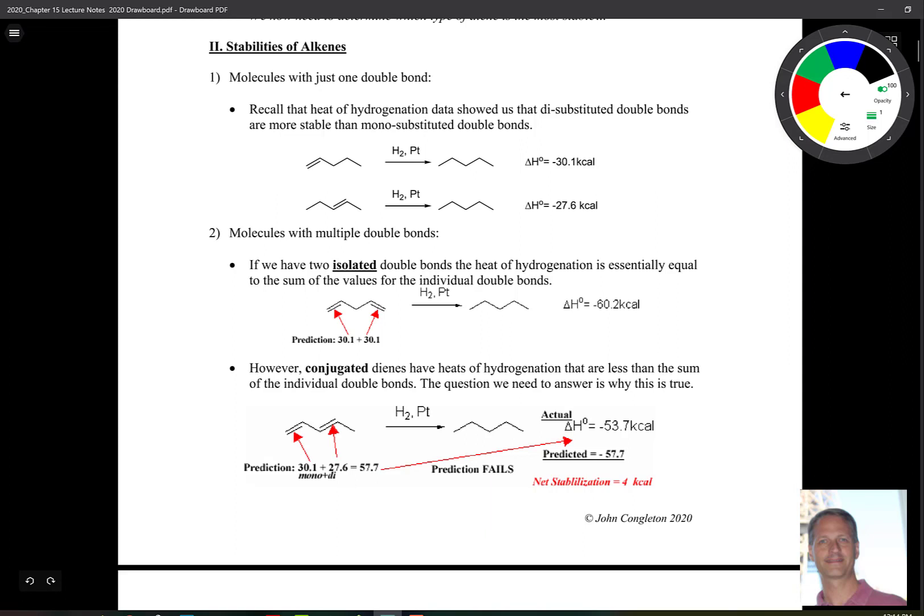What I want to look at first is just the delta H of hydrogenation for monosubstituted alkene and a disubstituted alkene. And notice that these are only one type of bond. So we don't have cumulated double bonds together. It's one type of alkene.